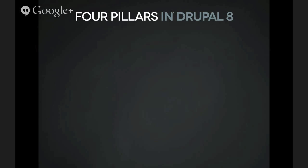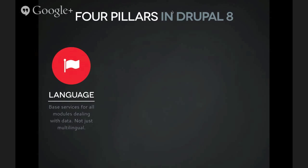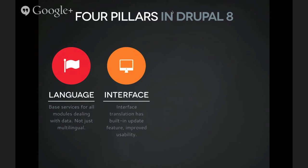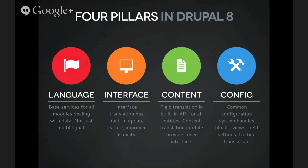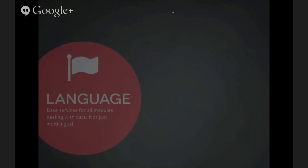We wanted systems for separate multilingual needs built in a future-compatible way, so we set up four pillars. The base pillar handles languages, providing base services for all modules dealing with data. We have an interface translation pillar, which supports translation of the software itself and includes automation. We have a content translation pillar, supporting nodes and all field-based content entities. And we have a configuration translation solution covering all kinds of configuration — spanning variables and everything the I18N module used to do in Drupal 7. All four are designed so that new modules coming into Drupal 8 will be supported by these systems.